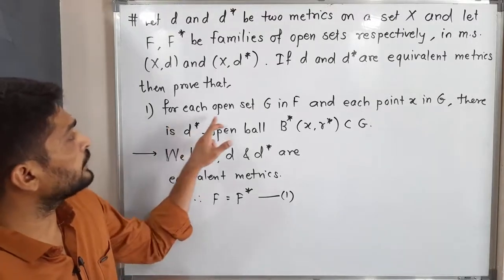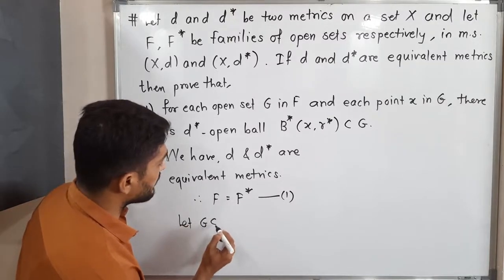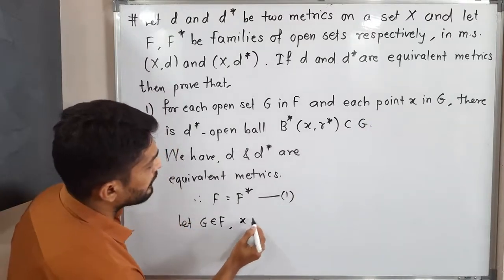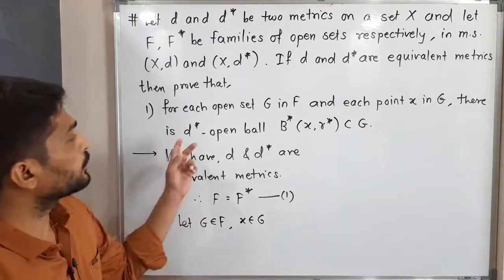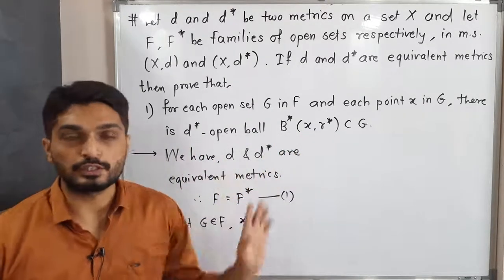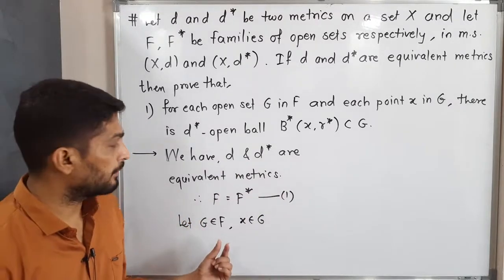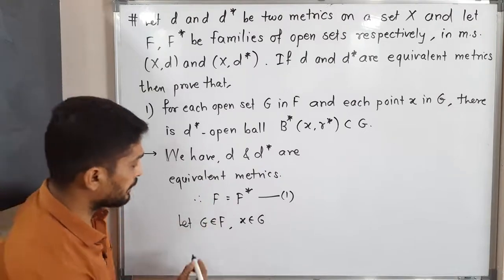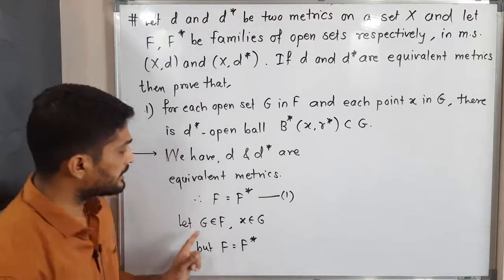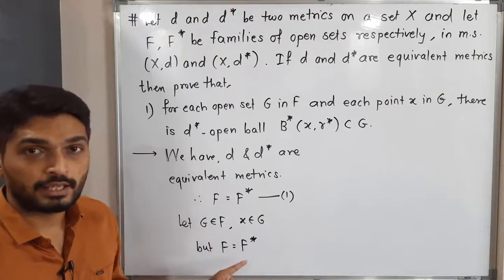See what we have to prove: we have to prove that for each open set G in F, and for each point X in G, there exists a D star open ball B star(X, R star) which is a subset of G. So we have G belonging to F. But from equation one, F is equal to F star. G is in F and F is equal to F star, so therefore we can say G is in F star.